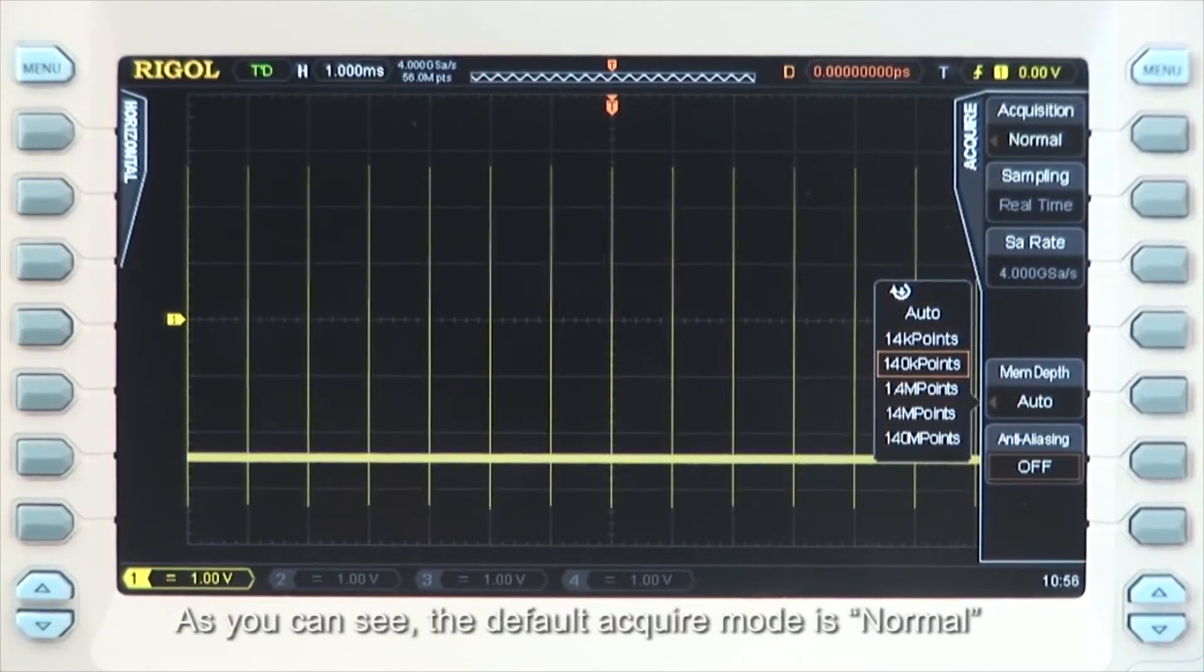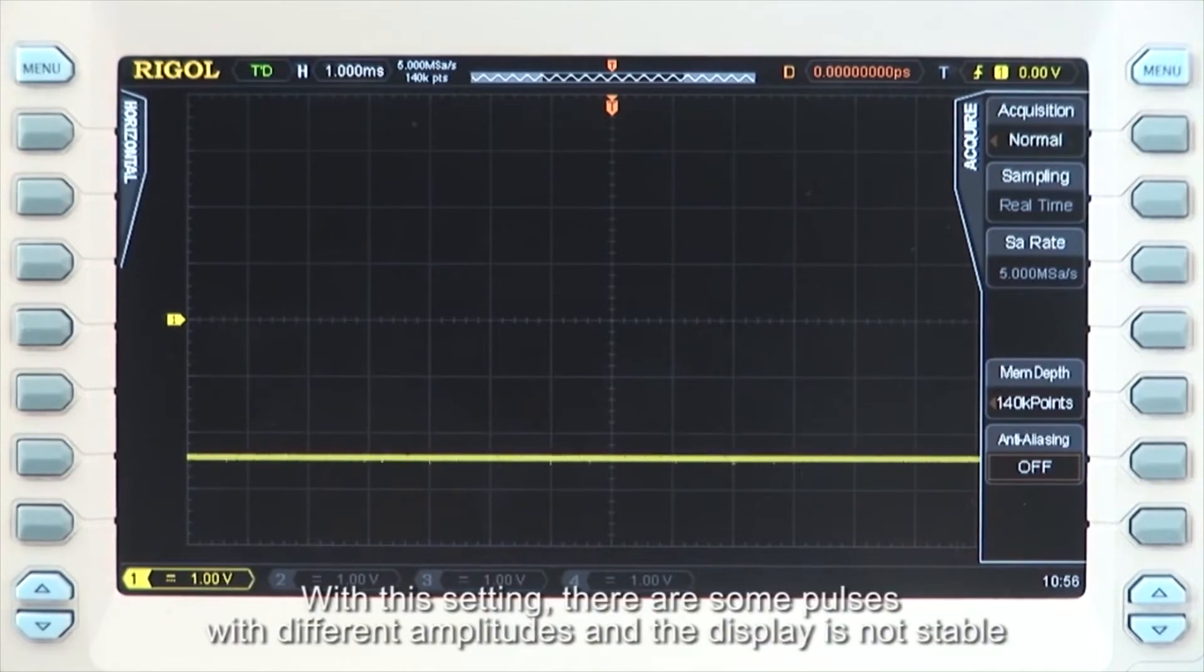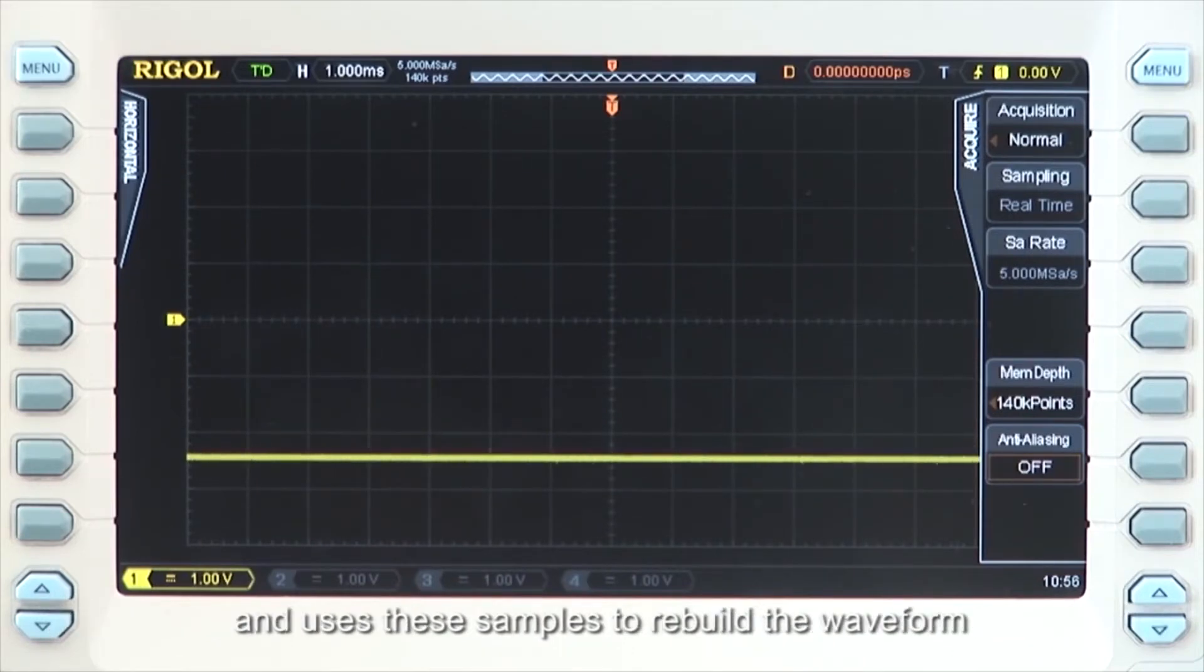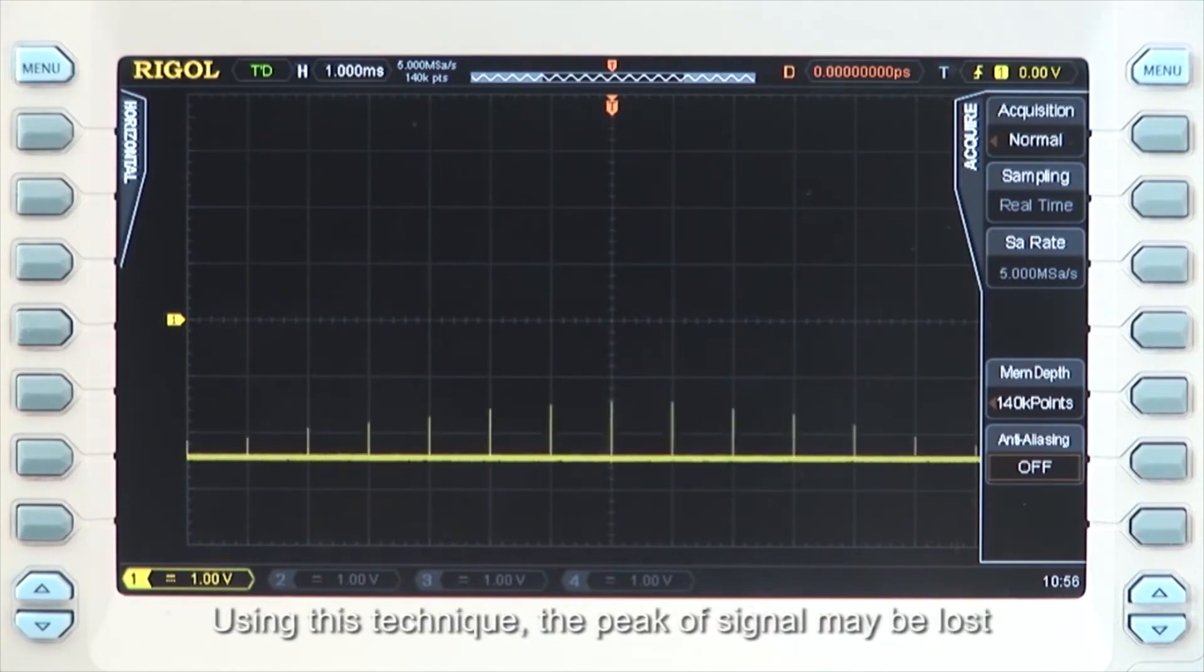As you can see, the default acquire mode is set to normal. With this setting, there are some pulses with different amplitudes and the display is not very stable. This is because the oscilloscope samples the signal at equal time intervals and uses these samples to rebuild the waveform. Using this technique, the peak of the signal may be lost.